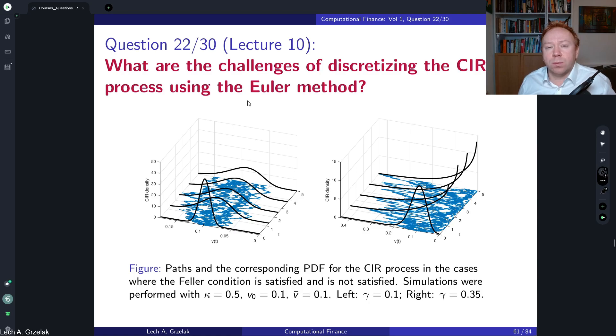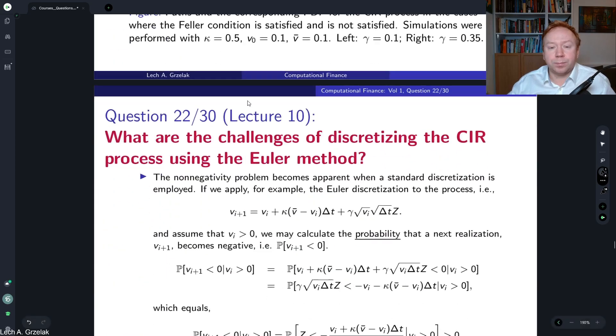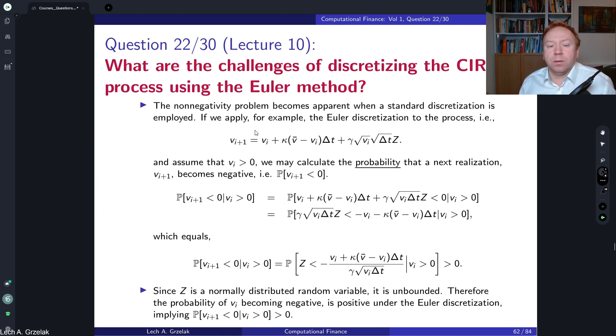So let's take a look what are the problems with the Euler discretization if we consider the CIR process. With the Euler discretization discussed in lecture number 10, this is what we do: we derive an iterative process where the next iteration step depends on the previous step where we have a constant parameter, we have a dt term, and then we have the volatility which is gamma, and then we have a square root of the previous realization, and then we have the Brownian motion part. Actually in Euler discretization it will be a square root of the time increment times z, and z is normally distributed zero one. We deal with the Brownian motion increments.